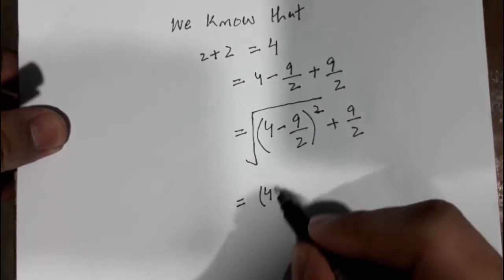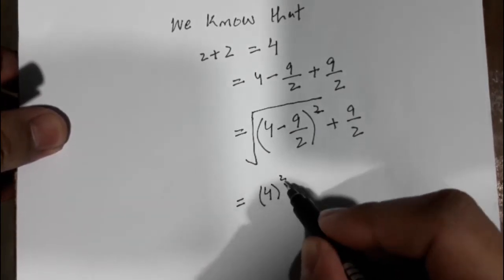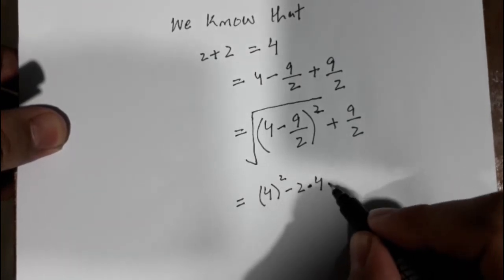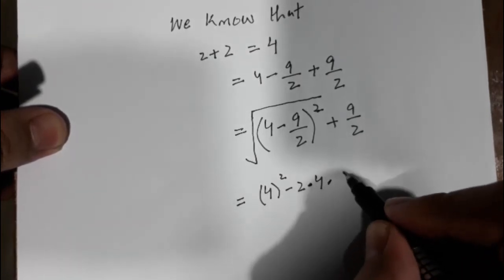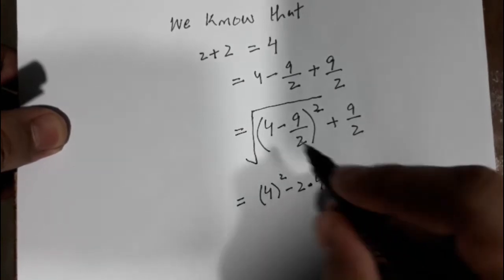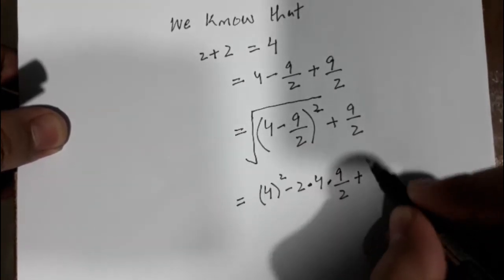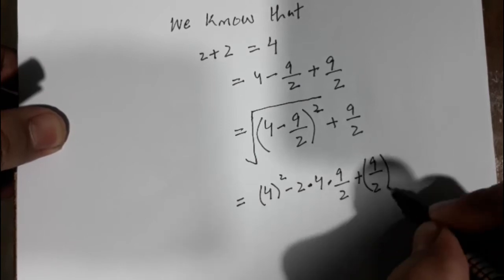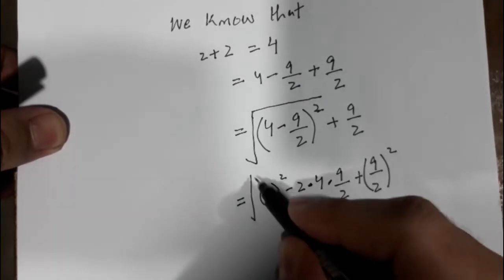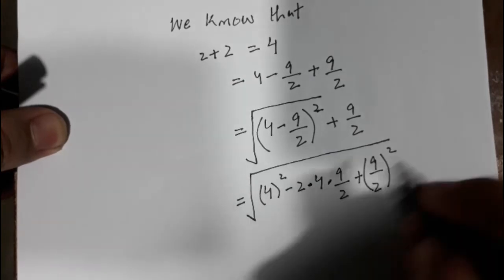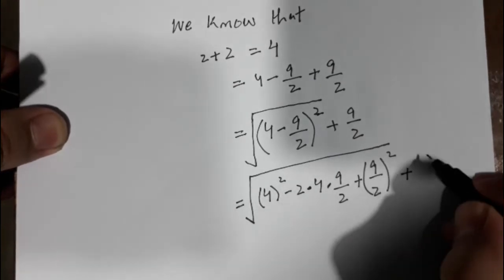4 squared minus 2 into a, that is 4, into 9 divided by 2 — this is b — plus b squared, which is 9 divided by 2 whole square. This is all under the square root, plus 9 divided by 2.